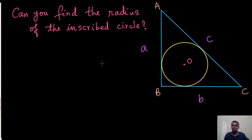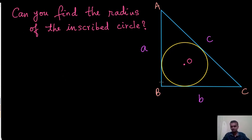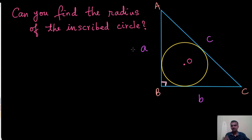Hello everyone. I hope all of you are having a wonderful day. Today we have an interesting geometry problem. We have a right angle triangle, right angled at point B, and a circle that is inscribed inside this right angle triangle. This right angle triangle has sides A, B, and C. Our goal is to find the radius of the inscribed circle.